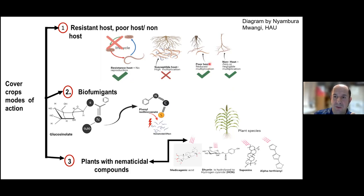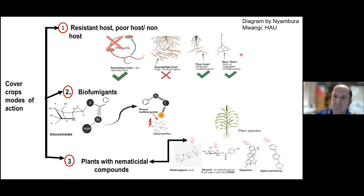Part of a strategy may be to use a cover crop regarded as a poor host. For example, black oats are used for reducing root lesion nematodes because they are hosts, but they're poor hosts, which leads to reduced multiplication of the nematodes. And then we've got non-hosts — plants that are simply not hosts for nematodes — which means that nematodes are not stimulated and the decline rate of the nematodes whilst those cover crops are there should go down.